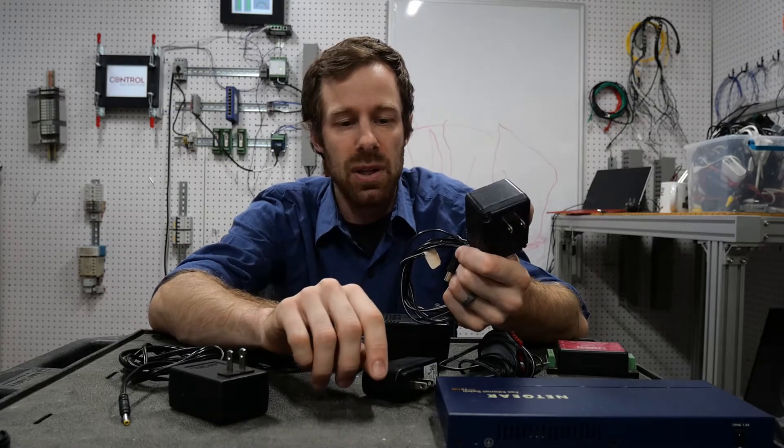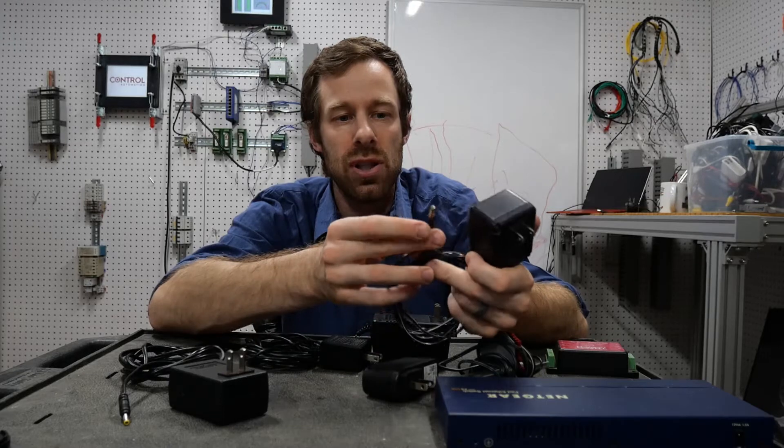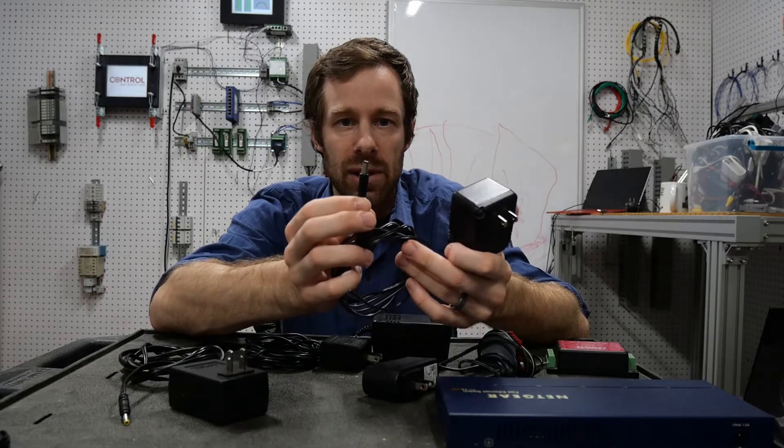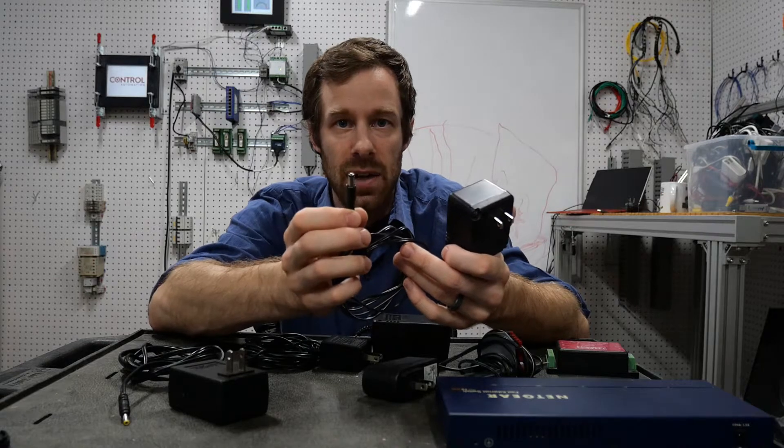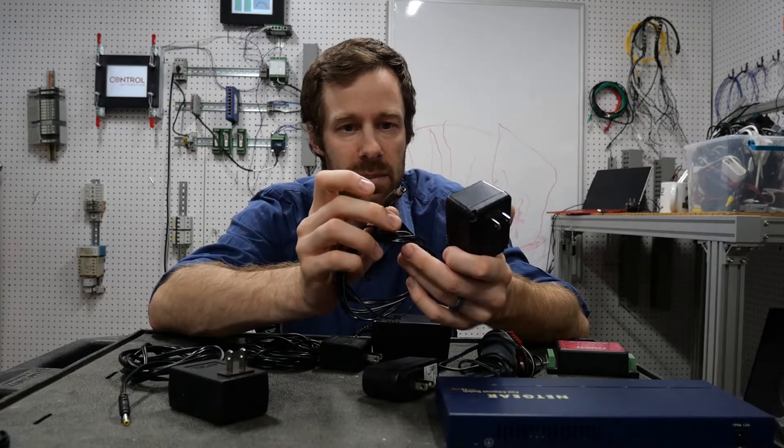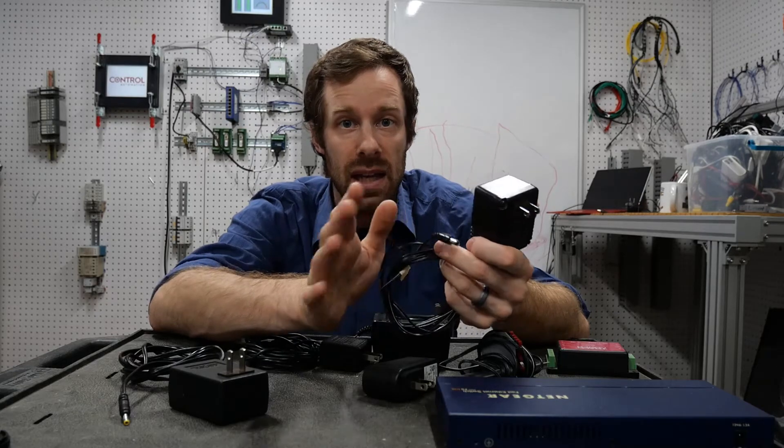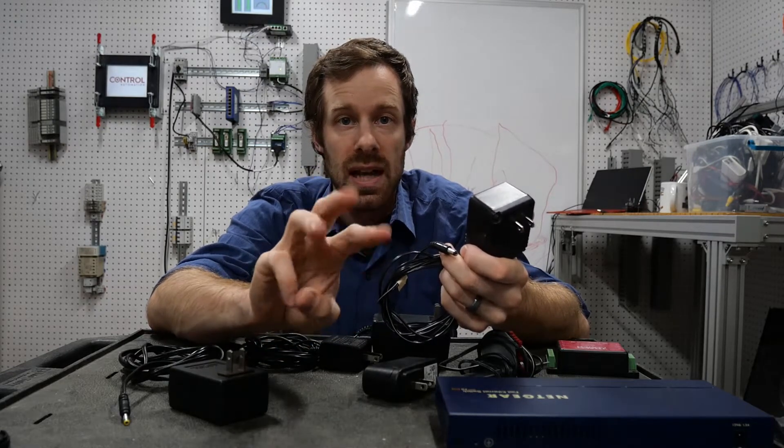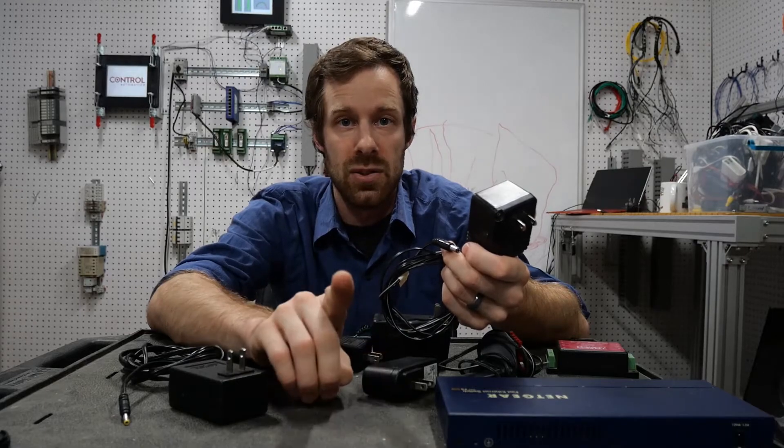I'll start with that last one, the barrel size. That's usually pretty intuitive because if it fits and slides into whatever you're plugging it into easily you've got the right barrel size. There's some ways around that but that's the easiest one. Now onto those numbers and symbols: voltage, current, and the symbol for polarity. Let's check those out.